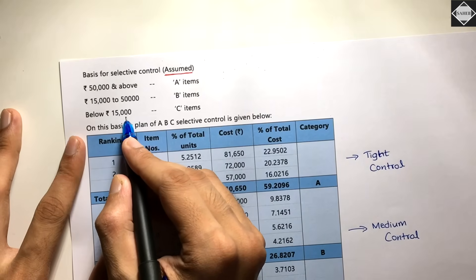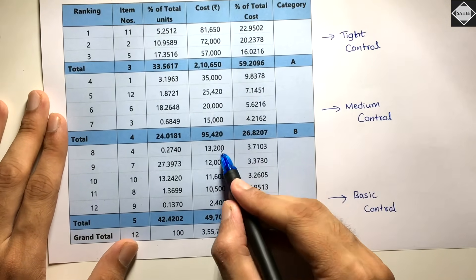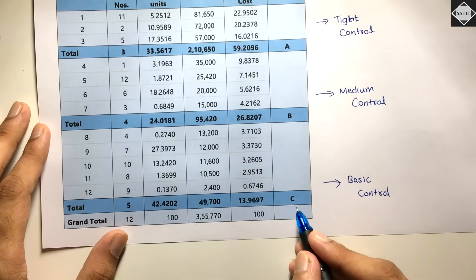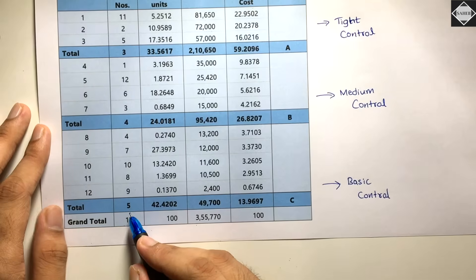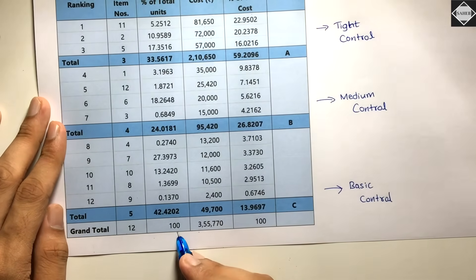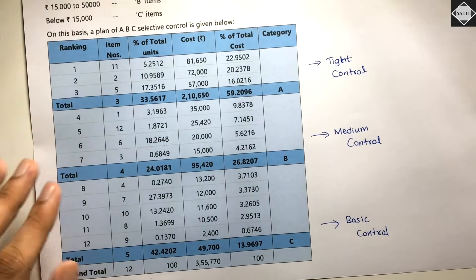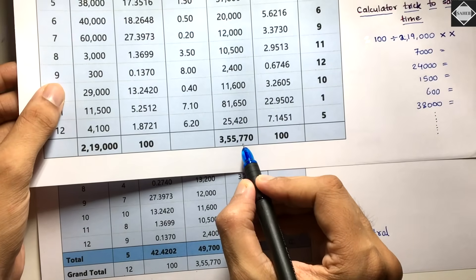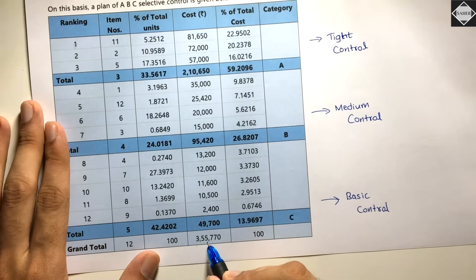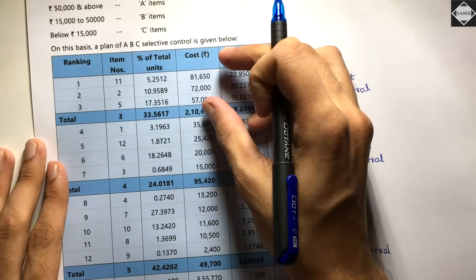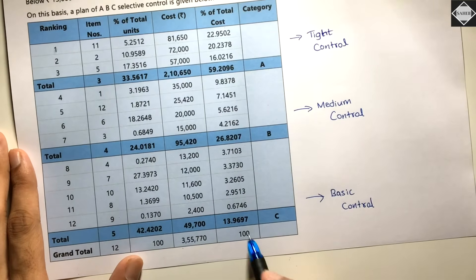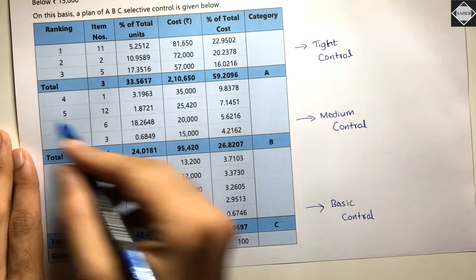Category C (below ₹15,000) contains five items with total costs of ₹13,200; ₹12,000; ₹11,600; ₹10,500; and ₹2,500 — all below ₹15,000. So Category C has five items. Now make the grand total: total items = 12, total percentage = 100%, and total cost = ₹3,55,770. This does not change regardless of categorization. Within each category, simply sum the items, percentages, and costs.